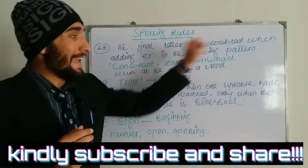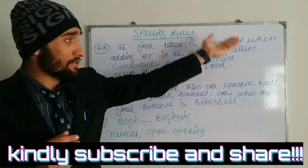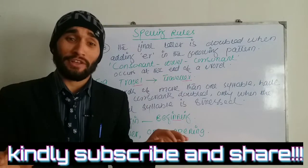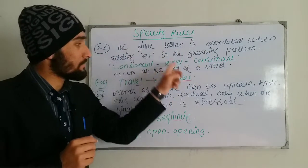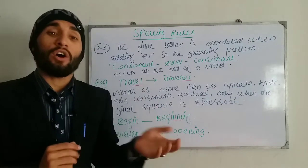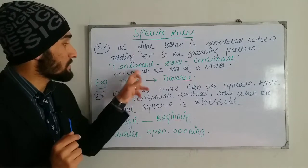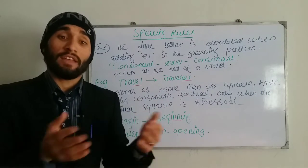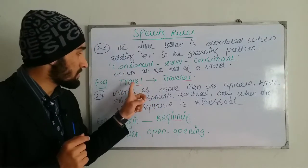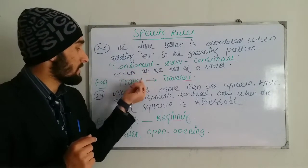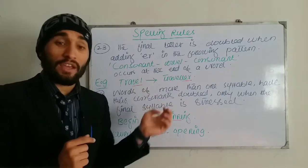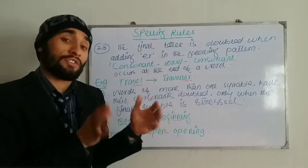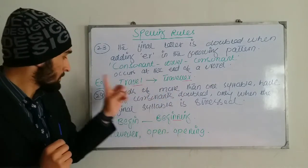Rule twenty-three: the final letter is doubled when adding -ER in the following pattern — consonant, vowel, consonant. When we have this CVC pattern occurring at the end of a word, we always double the final consonant when adding -ER. For example, 'travel': we have V, which is a consonant, then A, which is a vowel, then L, which is a consonant — the V-E-L follows this pattern. So when adding -ER, the final consonant doubles: 'traveller'.